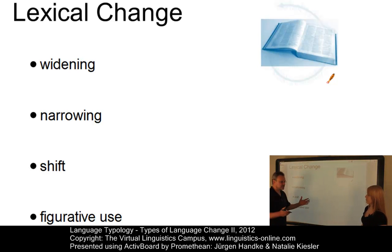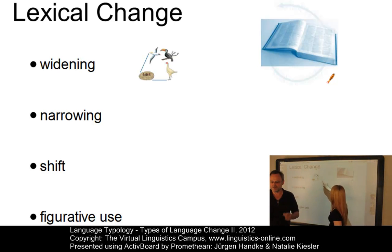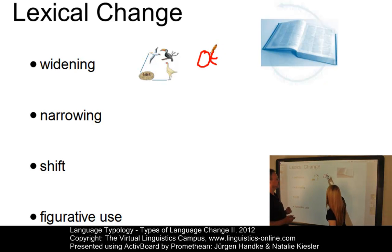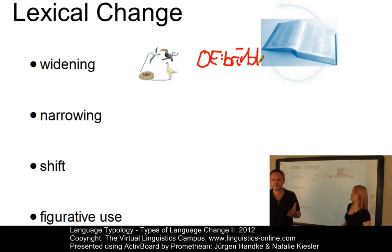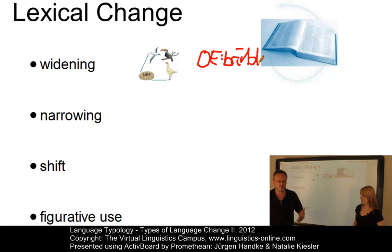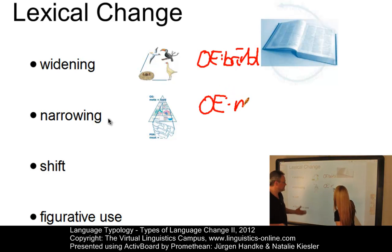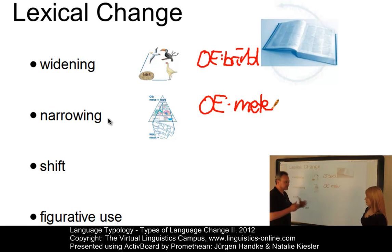Widening is when a lexeme acquires additional meanings while still retaining the old one. In Old English we had 'brid,' which meant young bird specifically, while the general term for bird was 'furel' or 'fowl.' During the Middle English period both merged and became fowl of any age. The next type is narrowing, the opposite of widening. In Old English, 'mete' meant food in general, but today we have two terms — 'food' and 'meat' — which are of course different.